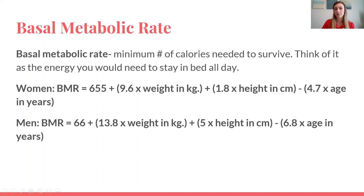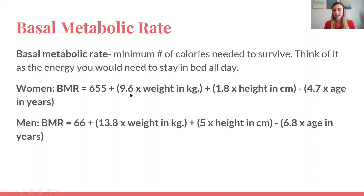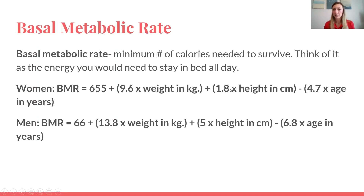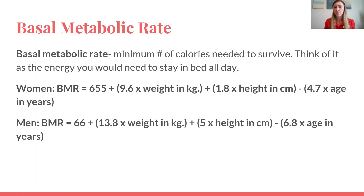Basal metabolic rate is the minimum number of calories you need to survive — think of it as the amount of calories it would take to sleep in bed all day. For women, the calculation is: 655 plus (9.6 times your weight) plus (1.8 times your height in centimeters) minus (4.7 times your age). Fill in those values, add them up, and that gives you the minimum calories you need daily. Everything you do once you sit up in bed already requires more energy than that. Men have a slightly different calculation, listed below.